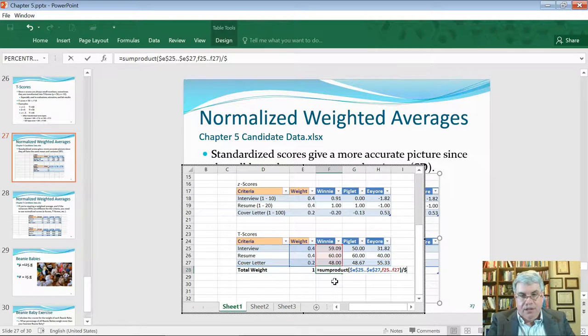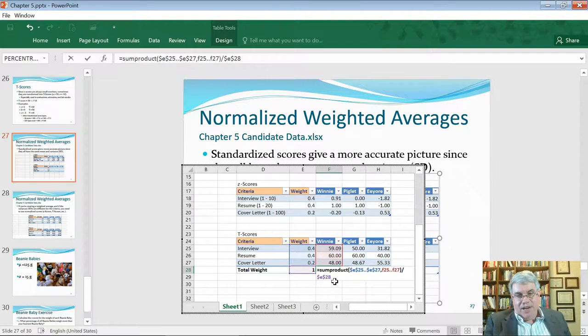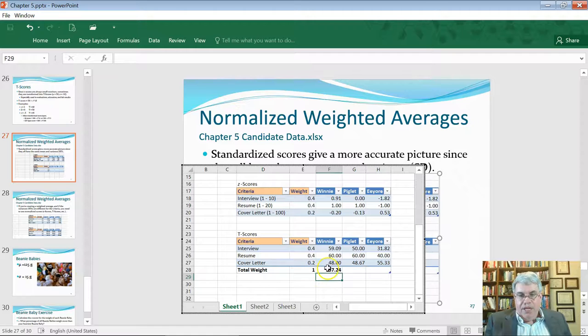So, that'll be shift, dollar, E, E, dollar 28. And so, we're dividing by 1, so that's really not doing much. But we're putting it in because that's part of the problem. And Winnie has a total weighted average of 57.24.